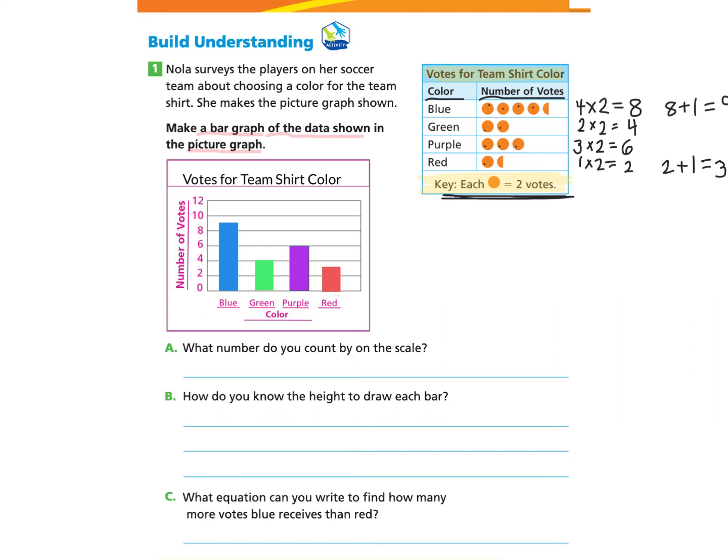So let's take a look at part A. Part A asks, what number do you count by on the scale? So when we're looking at the scale, we're seeing here that it goes from zero to twelve. And each time it goes up by two. So we can answer count by twos because each whole symbol equals two.